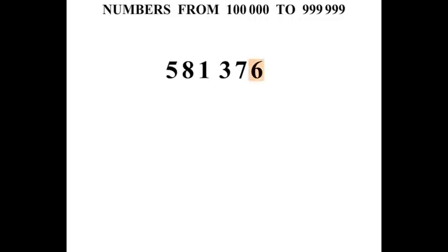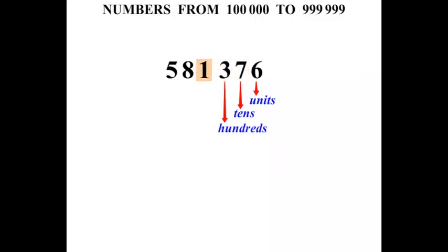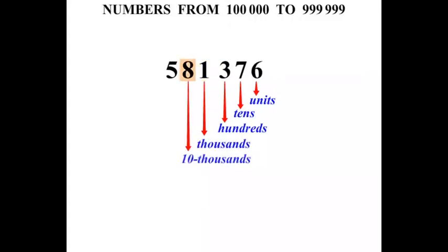That 6 is in the Units column, or the Ones column. The next one, the 7, is in the Tens column. The 3 is in the Hundreds column. The 1 is in the Thousands column. The 8 is in the Ten-Thousands column. And this 5 is in the One-Hundred-Thousands column.